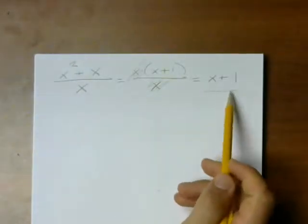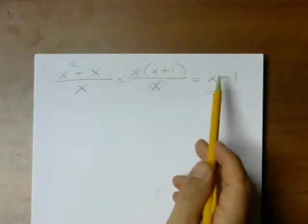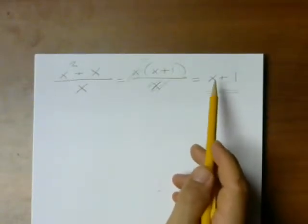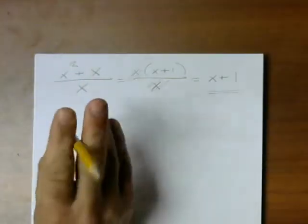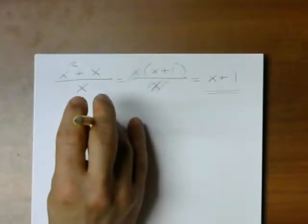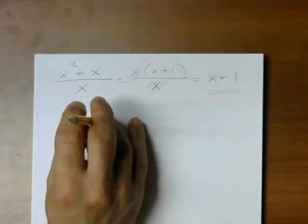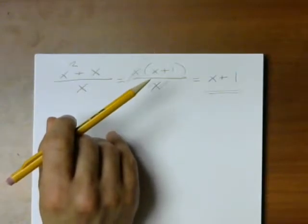Notice that this thing on the right is defined for all x. This exists if x is 0. As a matter of fact, it's 1. Very simple number. What about this on the left? This doesn't even exist if x is 0 because it's 0 divided by 0, which is not defined. Can't divide anything by 0, not even 0.